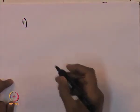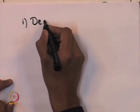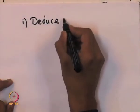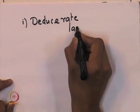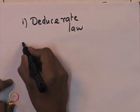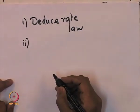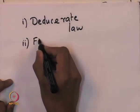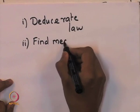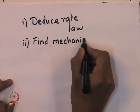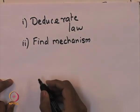Friends, let us summarize what we have learned in the last lecture. We have learned how to deduce the rate law from experimental data for a heterogeneous catalytic reaction. We have also learned how to find the mechanism behind a certain catalytic reaction.